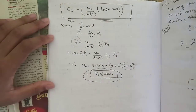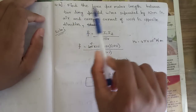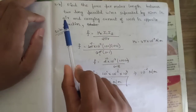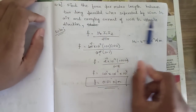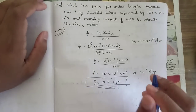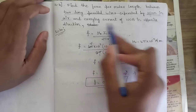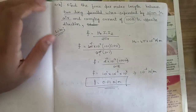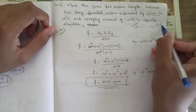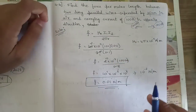Next question: Find the force per meter length between two long parallel wires separated by 10 cm in air and carrying currents of 100 A in opposite directions. We have two parallel wires separated by 10 cm, each carrying 100 A in opposite directions, and we need to find the force per unit length.